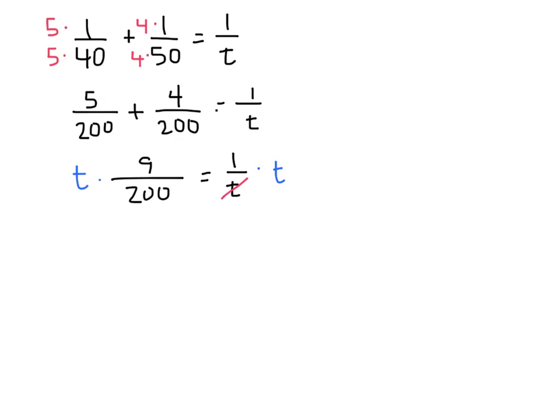On the right-hand side, the t's divide out. And so we get t times 9 over 200 equals 1.